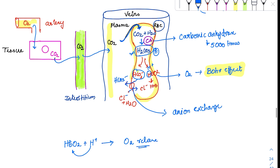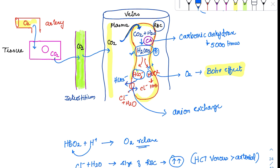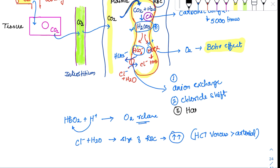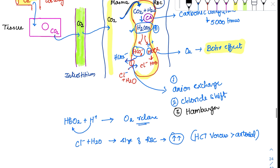So chloride goes into the RBC, and along with chloride, water also goes in. Because water is added, the size of the RBC on the venous side increases. This is why the hematocrit of venous blood is higher than that of arterial blood. This anion exchanger is also called the chloride shift, and it is also known as the Hamburger effect.